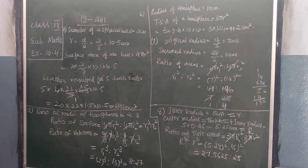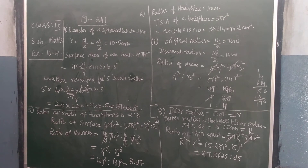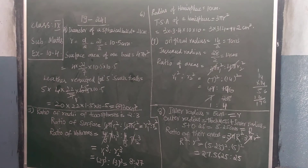After that what will I do children? They have asked you in the question: what is the material required for preparing 5 such balls? So I will find out the material required for 1 ball. I will find out the surface area. The surface area of 1 ball is equal to 4 pi r square. So 4 pi r square into 5 I will do.